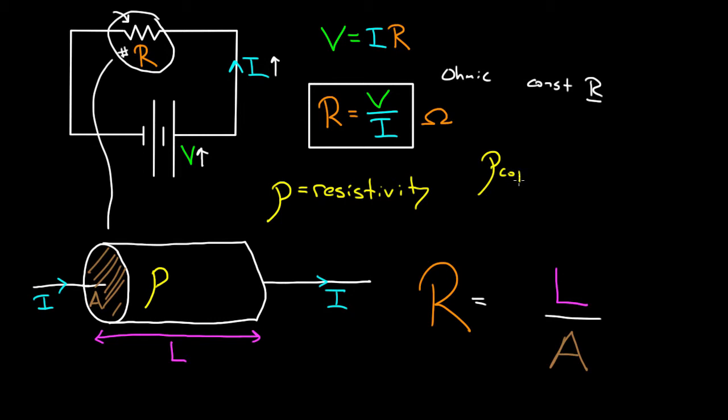To give you an idea of the numbers here, the resistivity of copper, well that's a metal, it's gonna be small. It's like 1.68 times 10 to the negative eighth. We'll talk about the units in a second. But the resistivity of something like rubber, an insulator, is huge. It can be on the order of 10 to the 13th. So there's a huge range of possible values as you go from metal, conductor, to semiconductor, to insulator. Huge range of possible resistivities.